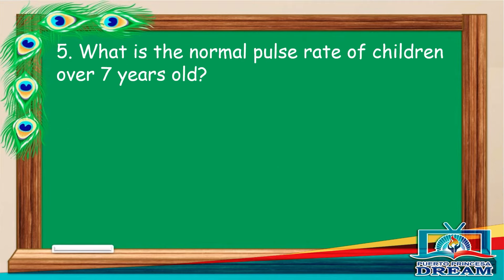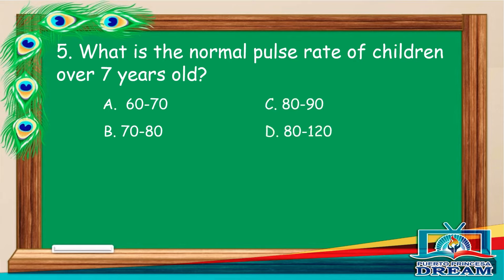Number 5. What is the normal pulse rate of children over 7 years old? A. 60-70. B. 70-80. C. 80-90. D. 80-120.